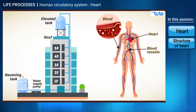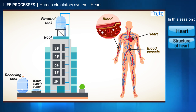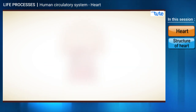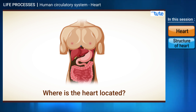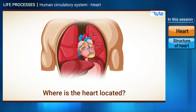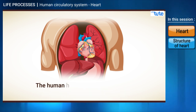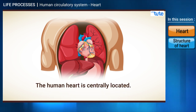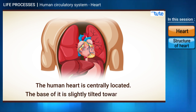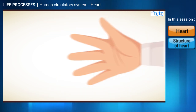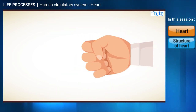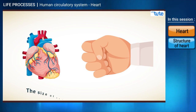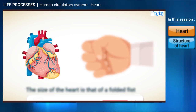Let's learn each of these components one by one, starting with the pumping organ — the heart. Where is the heart located? Yes, it is in the chest cavity. Is it on the left side? No, my friends — the human heart is centrally located; the base of it is slightly tilted towards the left. Now, everyone quickly fold your palm to form a fist — that's actually the size of our heart, the size of our folded fist.